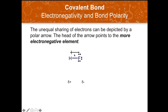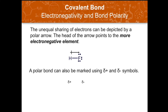We can indicate unequal sharing with a polar arrow, where the head of the arrow points to the more electronegative element. We can also mark this polar bond with partially positive and partially negative symbols. The partial positive symbol is assigned to the less electronegative element, and the partial negative symbol is given to the more electronegative atom. In our example, the partial positive is assigned to hydrogen and the partial negative to fluorine.